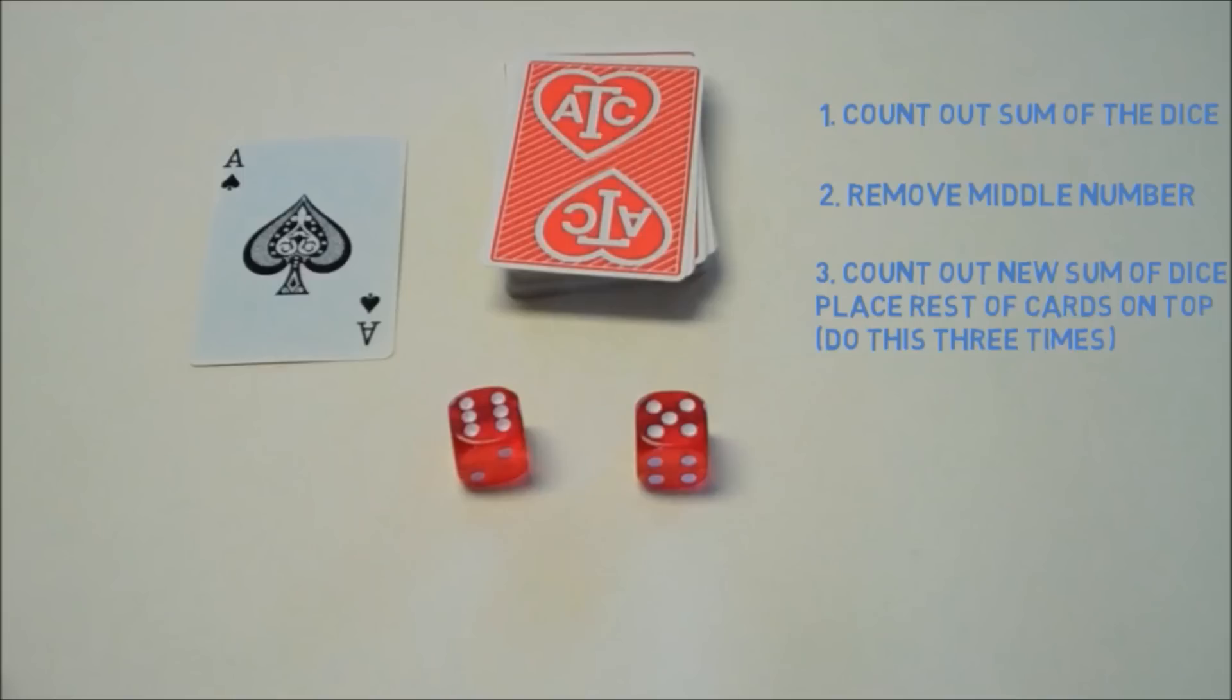So this trick is mathematically complicated to explain, but trust me, it works every time, and it's pretty impressive because there's no way you could have predicted what the numbers on the dice were.